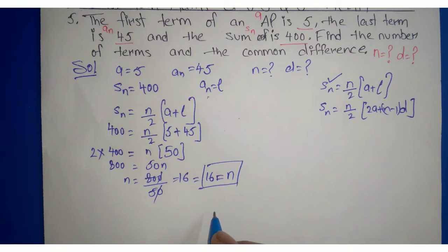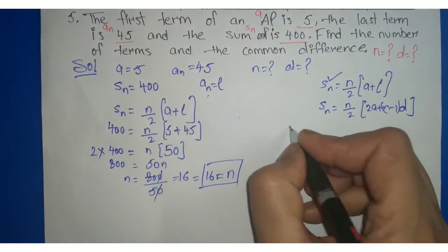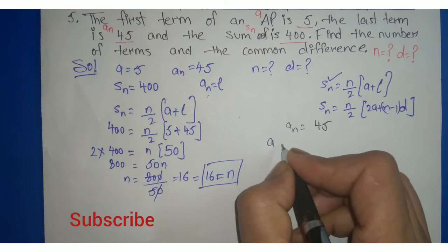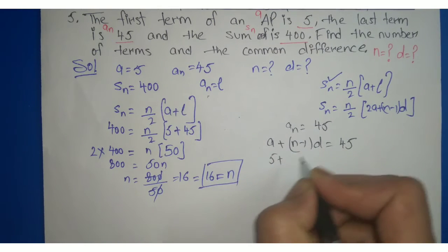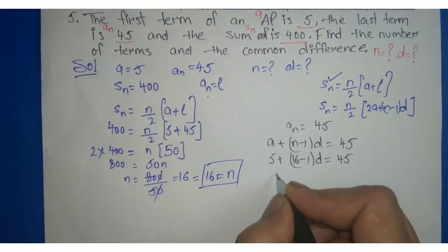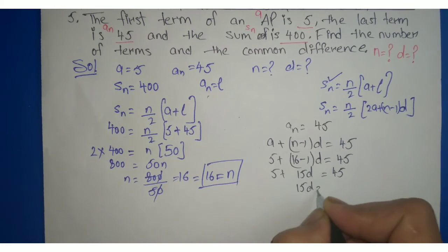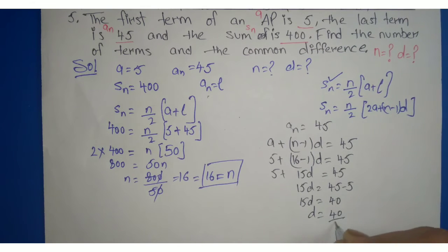अब N की value solve हो गई है, D की value find out करनी है। D की value find out करने के लिए हम nth term के formula पर values put करेंगे: AN given है 45, formula है A plus (N minus 1) into D equal to 45। Values put करते हैं: 5 plus (16 minus 1) into D equal to 45, यानी 5 plus 15D equal to 45। 5 को right side shift करने पर 15D equal to 40, so D equal to 40 upon 15, which simplifies to 8 upon 3।